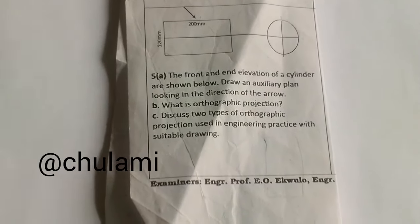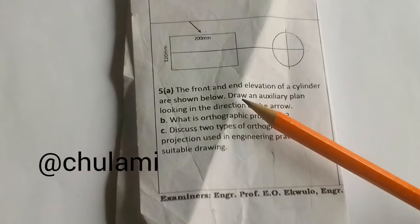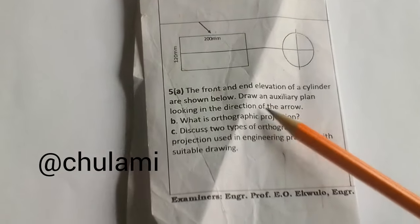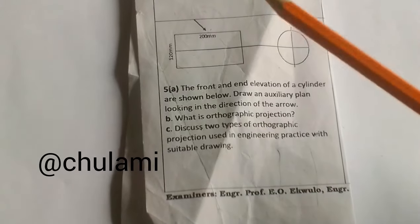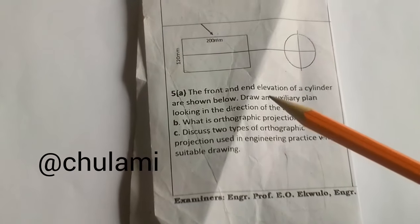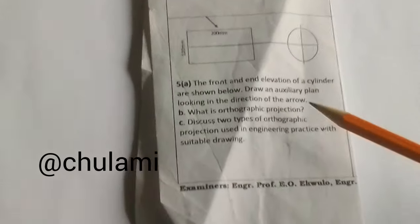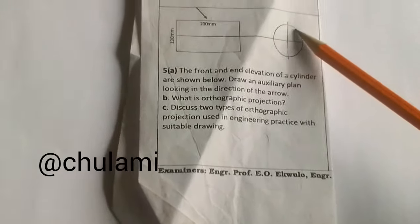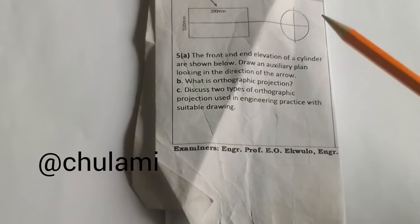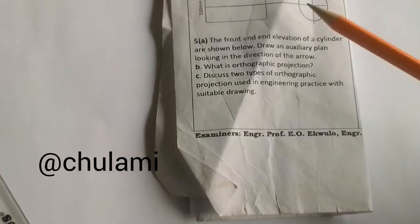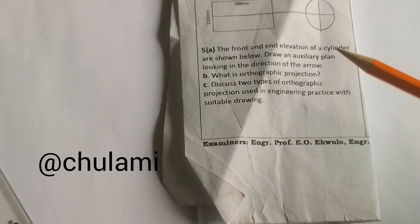This question says the front and end elevation of a cylinder are shown above. Draw an auxiliary plan looking at the direction of the arrow, which is this arrow. So we're gonna draw the auxiliary plan of this cylinder. Let's start.